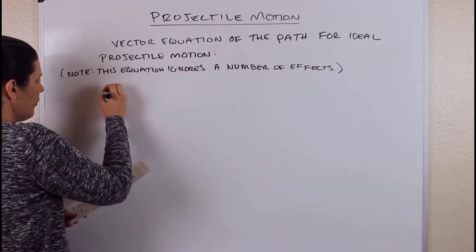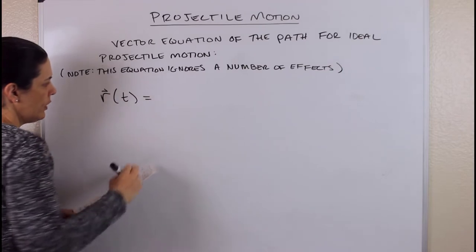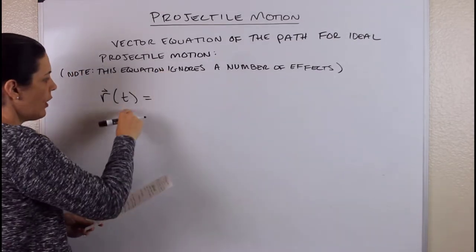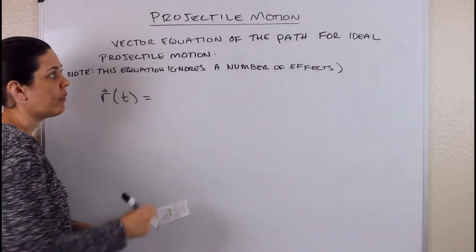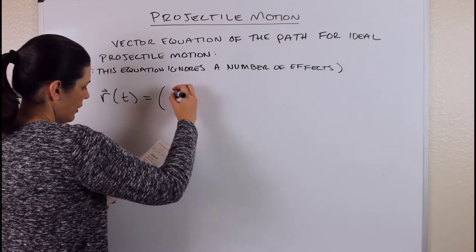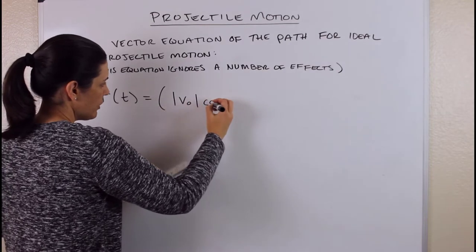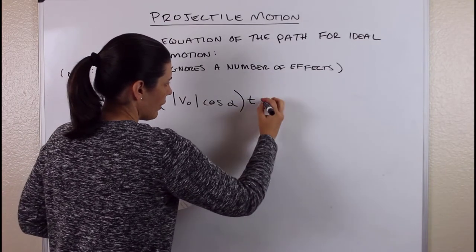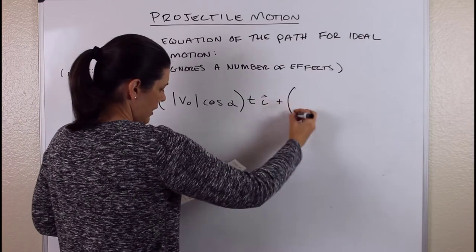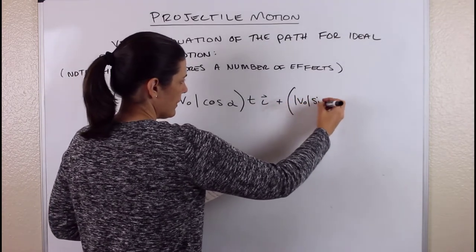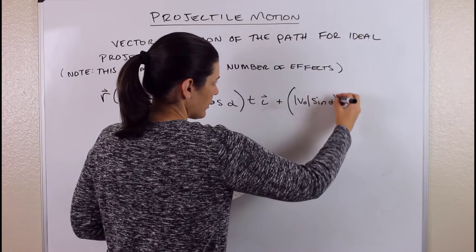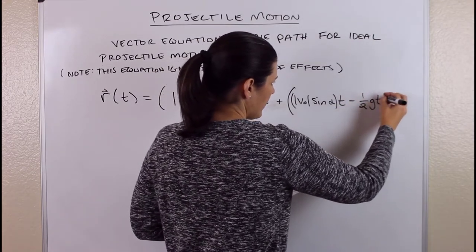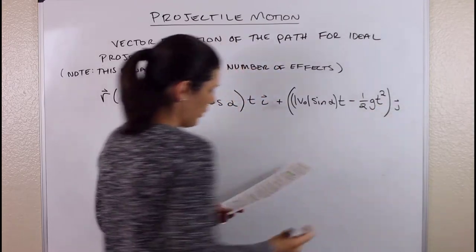Here is your vector function. r(t) represents position, and that's the path. If you take the point at every input t value, you'll get a series of points which represents the path of this object. This equals the magnitude of v naught times cosine alpha times t — that's the i component — plus the magnitude of v naught times sine of alpha times t minus one-half g times t squared, and that is the j component.